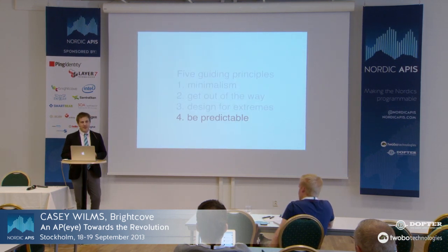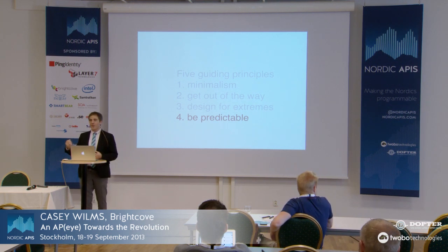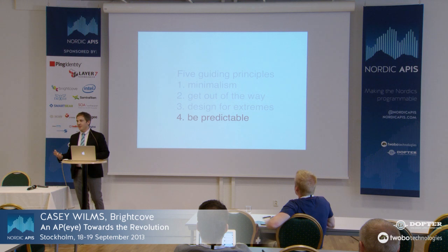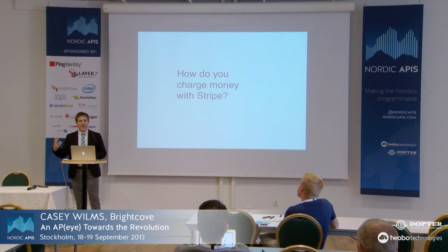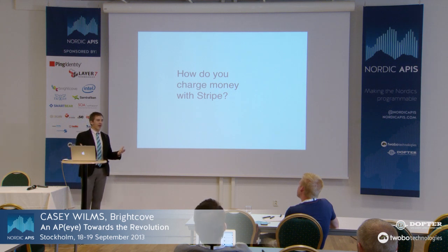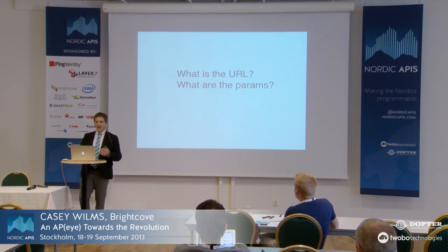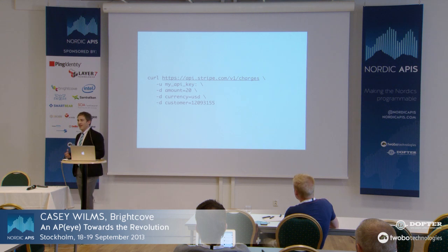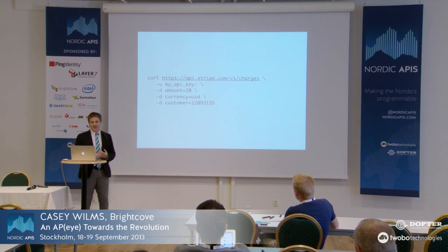The next guiding principle is be predictable. If we imagine what users are going to do with our service, we want it to feel like they designed the service themselves. For example, if we look at Stripe and try to imagine what a banking service API would look like — how would we charge customers, what is the URL, what are the parameters — it's actually pretty obvious. And if you're trying to integrate with this service, because it's predictable, things feel natural to you. It feels like it just works.